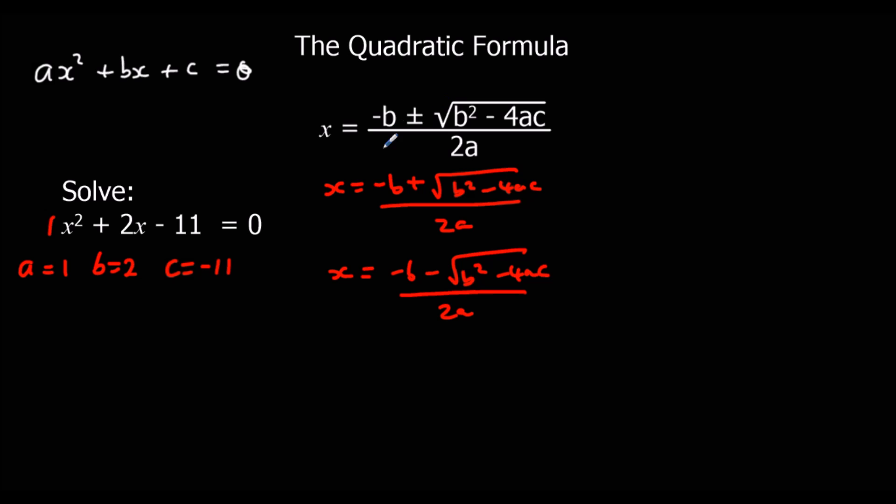So let's look at substituting into this formula. So x is going to be equal to minus b, so minus 2, plus or minus the square root of b squared, 2 squared, minus 4 times a, which is 1, times c, which is our minus 11, all over 2 a's, which is 2 times 1. So that's how you substitute into the formula. And then, essentially, we've got what we're going to type into the calculator.